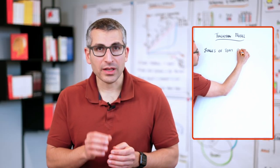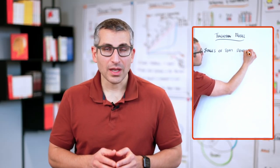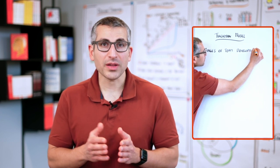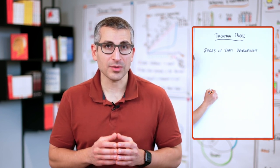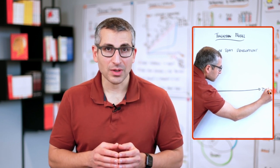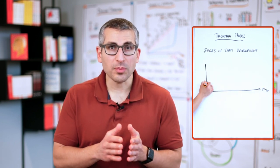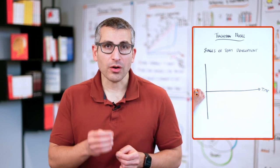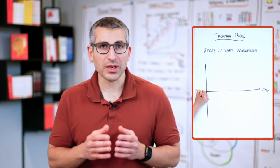I describe the Tuckman model in a very simplified way. On the horizontal axis, we look at the time, the journey that the team takes. On the vertical axis, we look at the team effectiveness. So at the baseline, one plus one would equal two. There are no frictions, but also not really synergies.